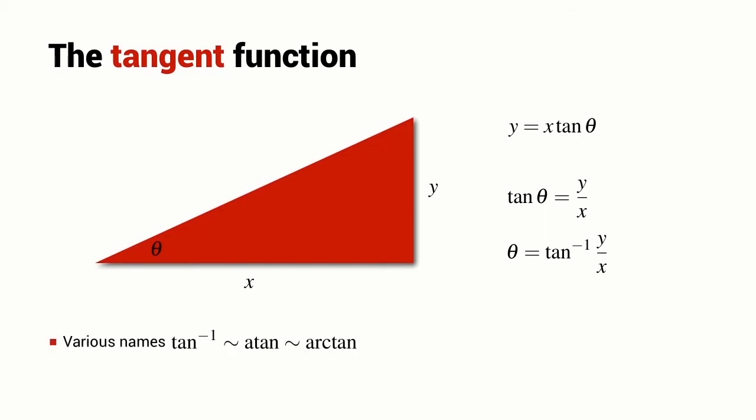The inverse tan function is denoted in many different ways, but most commonly it's written as tan to the power of minus 1. Sometimes it's written as atan and sometimes it's written as arctan. They're perhaps the most common ways of representing the inverse tangent function.